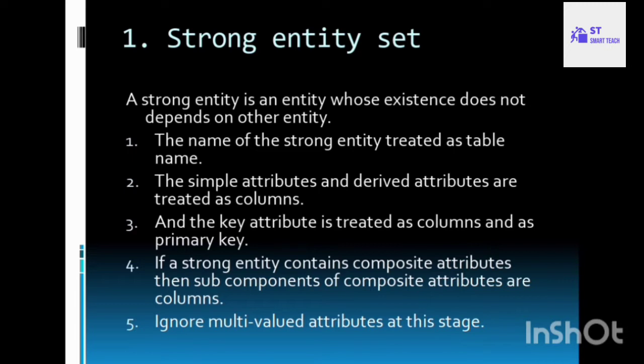For example, if student is a strong entity then the table name is student; if employee is a strong entity then employee is the table name. The simple attributes and derived attributes are treated as columns. Simple attributes hold atomic values. Derived attributes are derived from one or more other attributes — for example, age is derived from date of birth.